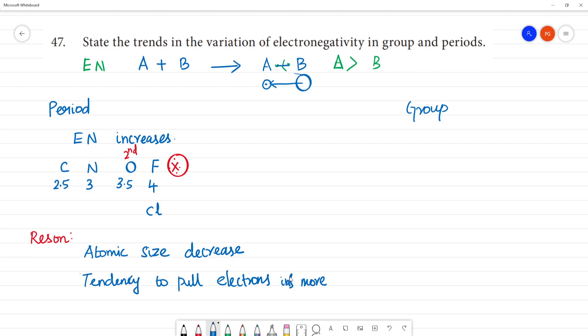Nuclear charge also increases. Carbon 6 atomic number, nitrogen 7, oxygen 8, one by one increase. Nuclear charge increases. So what happens? Electronegativity value increases along the period.